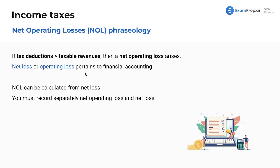Net loss or operating loss pertain to financial accounting. Net operating loss can be calculated from net loss. You must record separately net operating loss and net loss. So this net operating loss is specifically for tax purposes. Net loss or operating loss — these are financial accounting terms. Net operating loss, NOL, is our tax term.